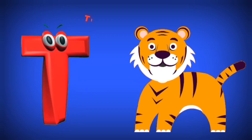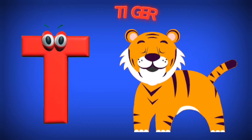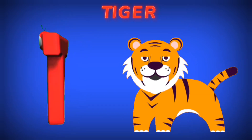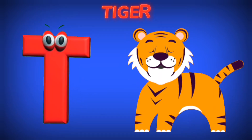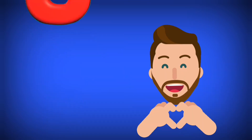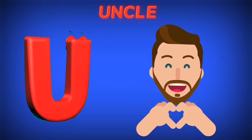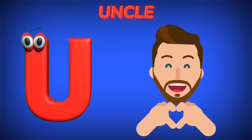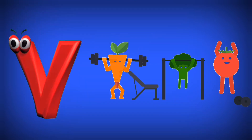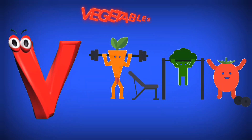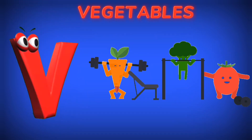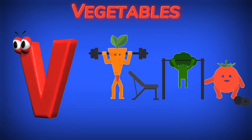T is for Tiger. T. Tiger. U is for Uncle. U. Uncle. V is for Vegetables. V. Vegetables.